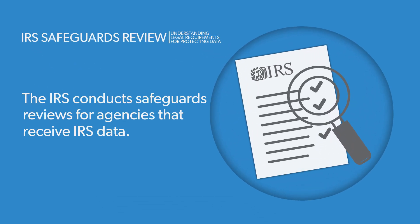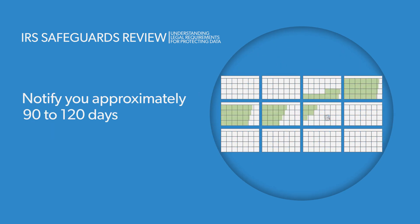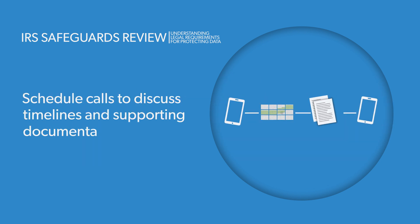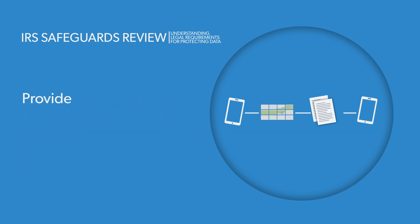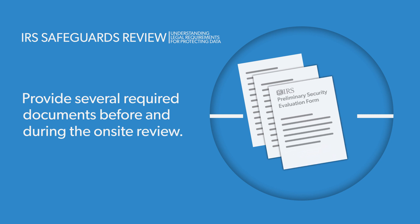IRS safeguards review: the IRS conducts safeguards reviews for agencies that receive IRS data. When your agency has an IRS safeguards review, the IRS may notify you approximately 90 to 120 days before the review, and schedule calls to discuss timelines and supporting documentation required for the review.